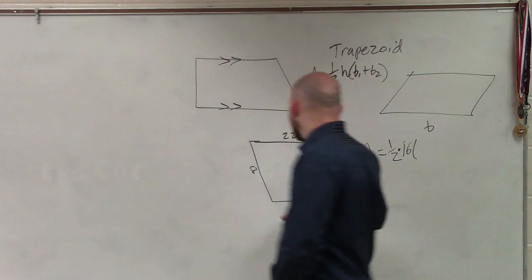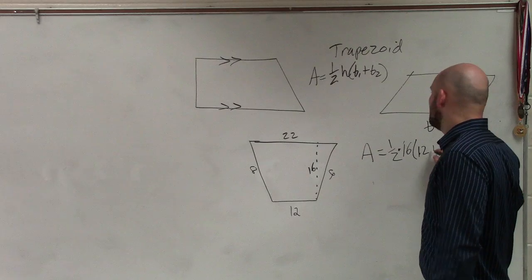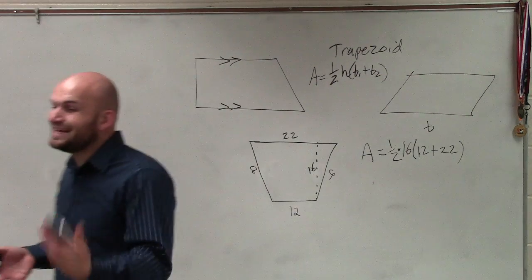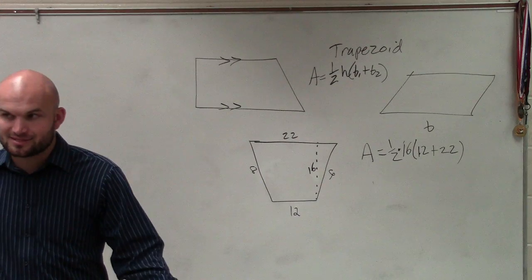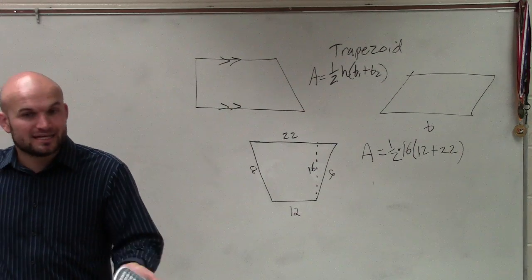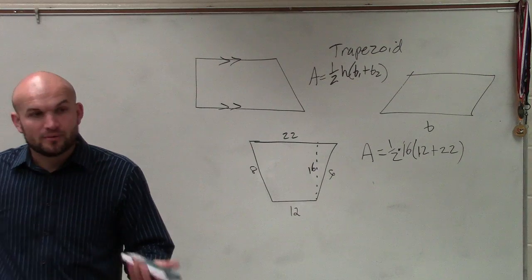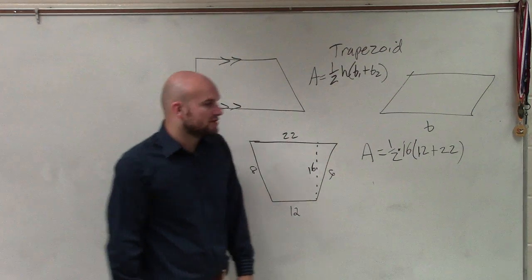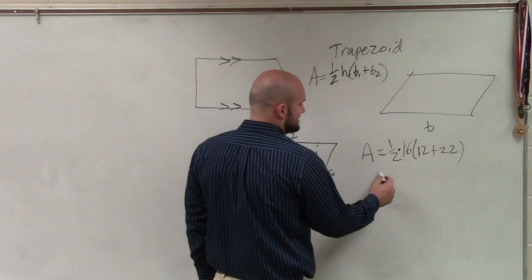So therefore, I have 12 plus 22. Notice that base one plus base two are inside the parentheses. Since they're inside the parentheses, we have to do that first by order of operations. So 22 plus 12 is going to be 34. One half times 16 is going to be 8.